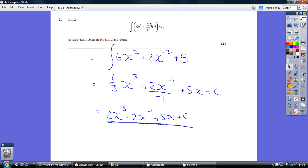First thing we want to do is just get this second term all onto one level. So sort of take the x squared back up to the top. So 2 over x squared is the same thing as 2x to the minus 2.